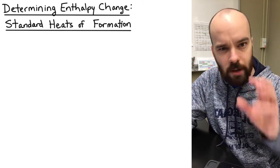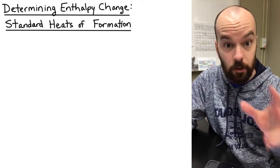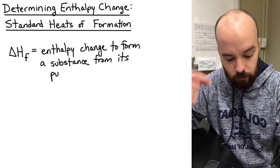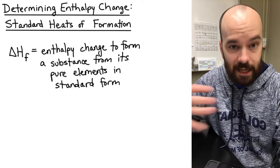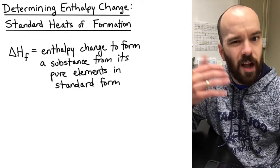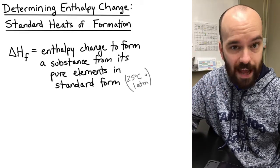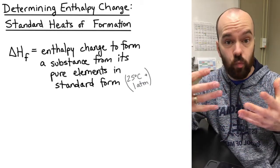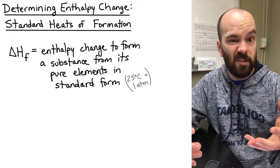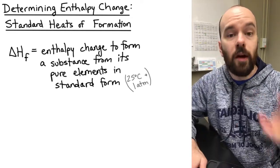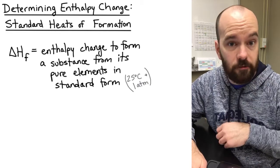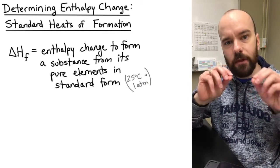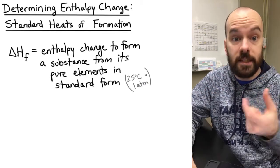A standard heat of formation, or standard enthalpy of formation, is the enthalpy change to form a substance from its pure elements in standard form. Standard form refers to how that element exists at 25°C and one atmosphere of pressure — whether it's a solid, liquid, or gas, and whether it exists as one atom or as a diatomic element like hydrogen or oxygen. Any enthalpy change, such as a heat of formation, must correspond to some reaction.